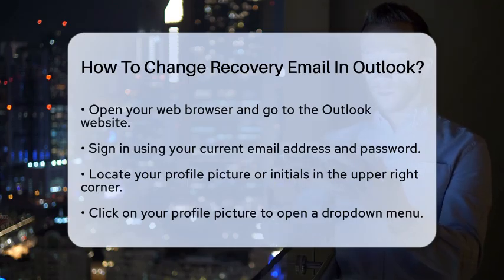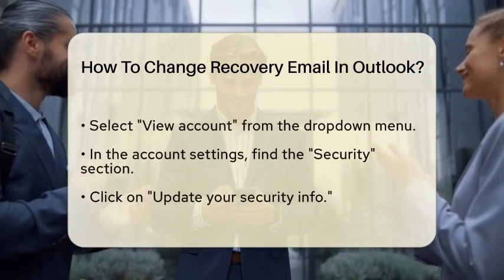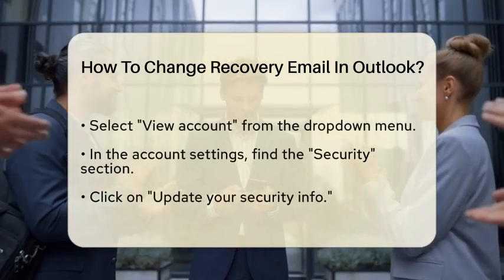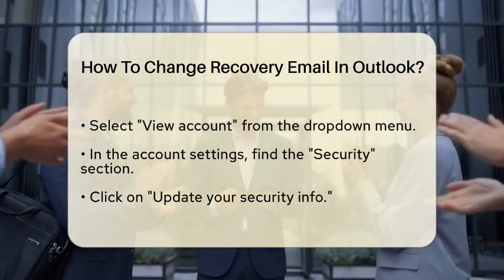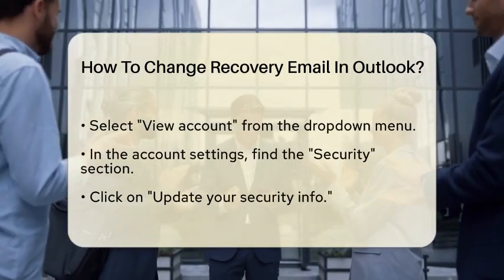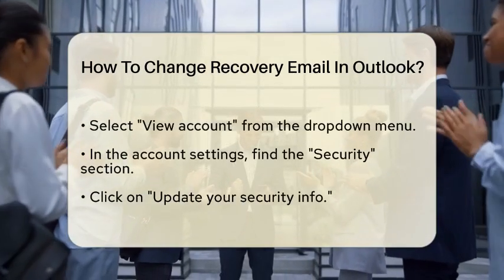First, open your web browser and navigate to the Outlook website. Sign in to your account using your current email address and password. Once you are logged in, look for your profile picture or initials in the upper right corner of the page. Click on it to reveal a drop-down menu.